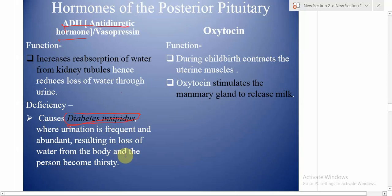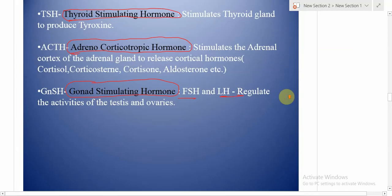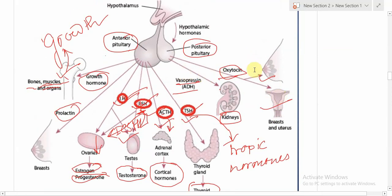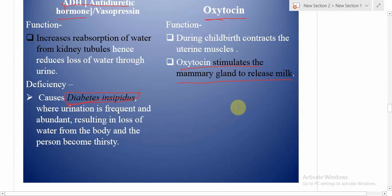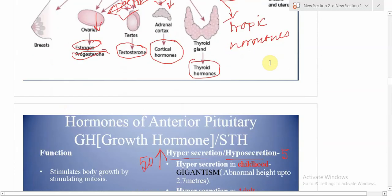Oxytocin, during childbirth, contracts the uterine muscles so that the baby can leave the mother's body more easily, reducing the mother's pain. Just after childbirth, oxytocin also stimulates the mammary gland to release milk. So prolactin produces the milk and oxytocin helps in the release of milk from the mother's mammary gland.